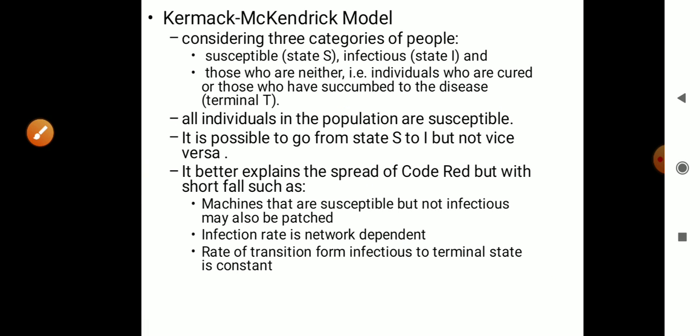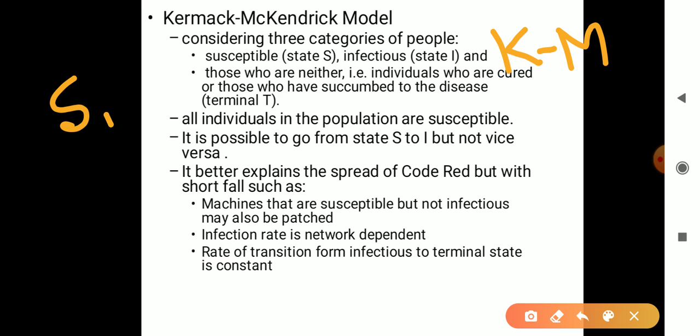The second one is the K Mark Nedrick model, which is usually famously called as KM model. Here instead of two states, he has been considering three states: one is S state, the second one is the I state, and the third one is terminal, which is neither. What they are going to say is that if it is moving from the suspected to the infected state, then it is not going back from the infected to the suspected state. So it is directly moving to the terminal.